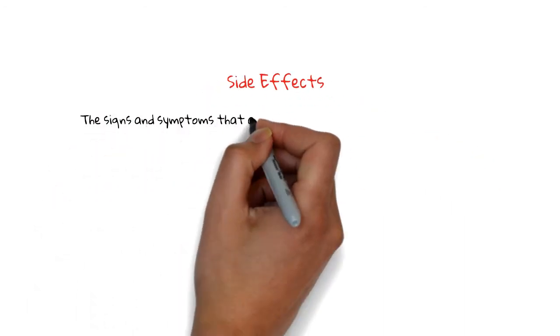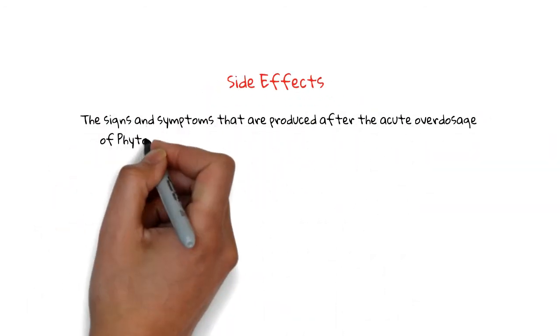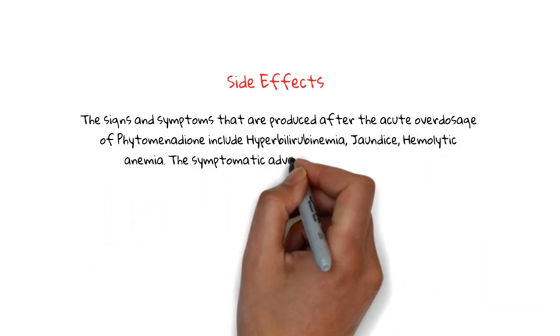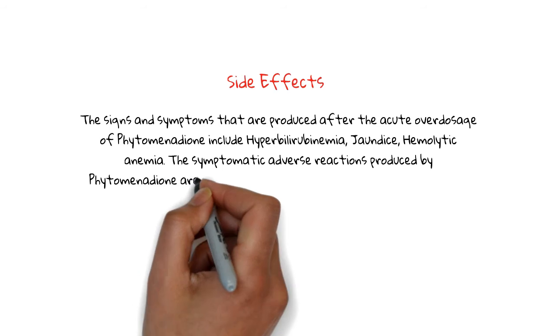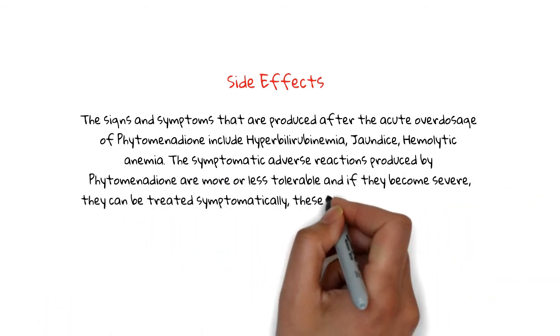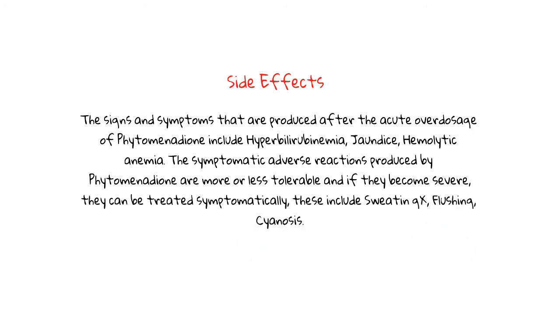Its side effects: The signs and symptoms that are produced after the acute overdosage of phytomenadione include hyperbilirubinemia, jaundice, and hemolytic anemia. The symptomatic adverse reactions produced by phytomenadione are more or less tolerable, and if they become severe they can be treated symptomatically.